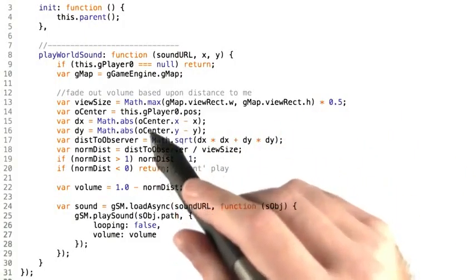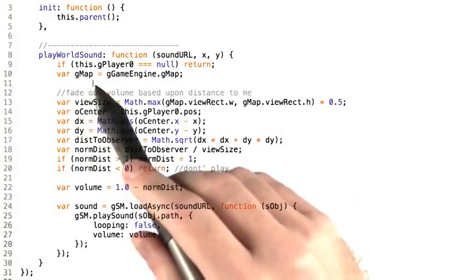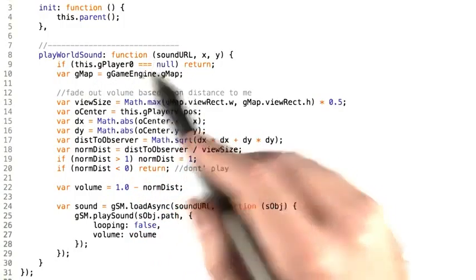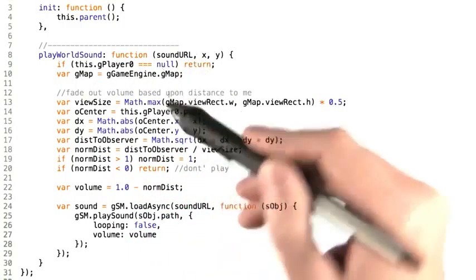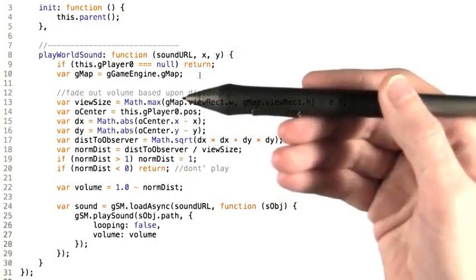All right, let's take a look at how we implemented the play world sound function. It takes as parameters first a sound URL representing the path to the sound that we want to play in the world, and then the x and y position that this sound should be played at.